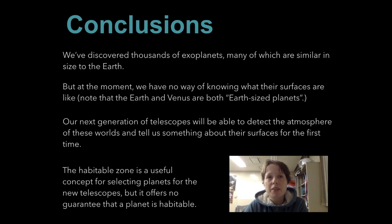So in conclusion, we've discovered thousands of exoplanets, many of which are similar in size to the Earth. But at the moment we have no way of knowing what their surfaces are like. Note in particular that the Earth and Venus are both very similar in size, so they are both Earth-sized planets. Our next generation of telescopes will be able to detect the atmosphere of these worlds and tell us something about their surfaces for the first time. The habitable zone is a useful concept for selecting planets for these new telescopes, but it offers no guarantee that a planet is actually habitable.